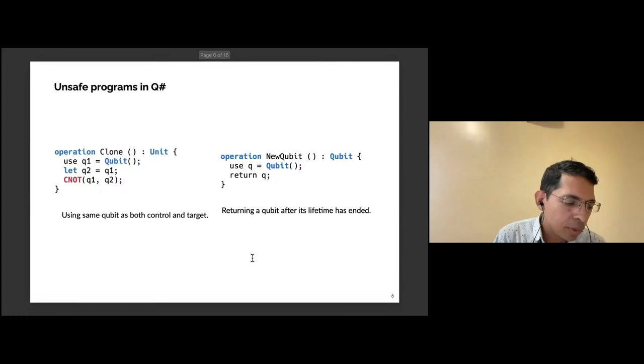To motivate that, here are a couple programs in QSharp which are invalid and should not be allowed by the compiler. First, a cloning operation which takes a qubit, creates a new qubit, makes a copy of that—effectively cloning the qubit. This currently passes the QSharp type checker and fails at runtime in the simulator. Similarly, on the right you see a function that allocates a qubit and immediately returns it. This possibility is allowed because QSharp has lexical scoping of lifetimes of qubits. This is again allowed by the language currently but should be invalid.